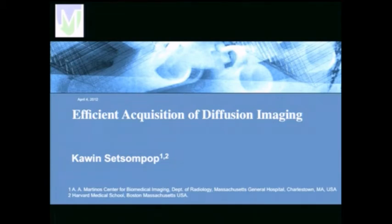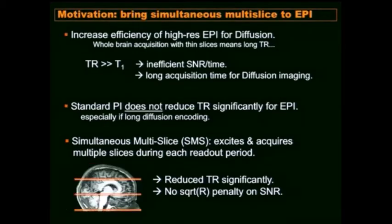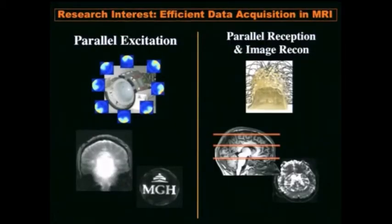Today I'll be talking about efficient acquisition for diffusion imaging. Before I get to that, I'll give an overview of my research interests in the MRI field. I started working on the parallel transmit project for my PhD, then moved into parallel receiving and image reconstruction. Today my talk will be focused on parallel imaging and image reconstruction methods to speed up diffusion imaging.